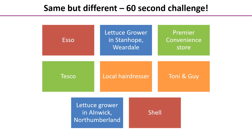Here are the pairs: Esso and Shell; two lettuce growers in different areas; a convenience store and Tesco; and a small local hairdresser alongside the Tony and Guy national chain.